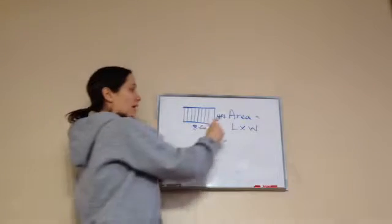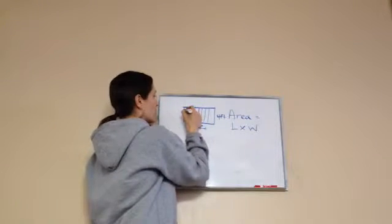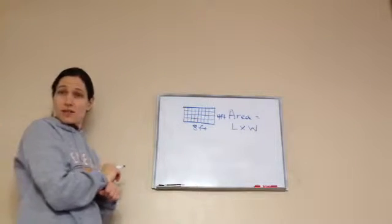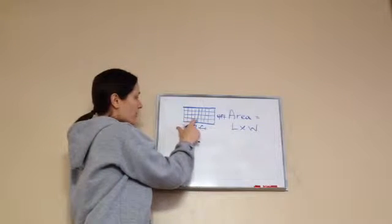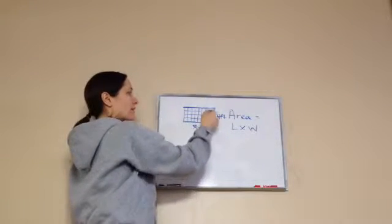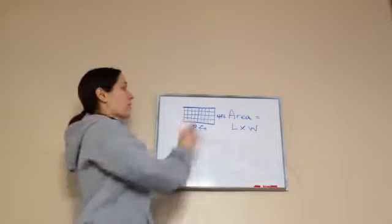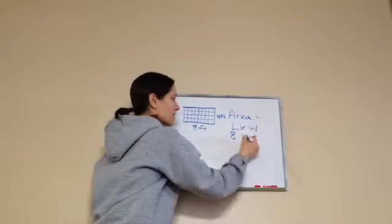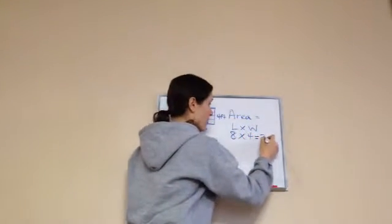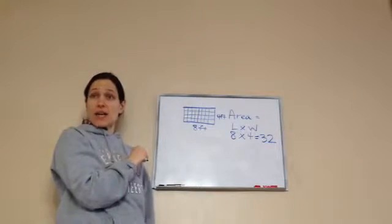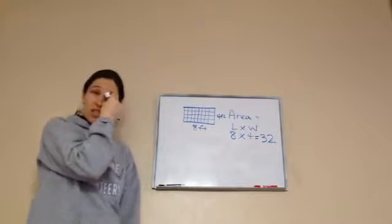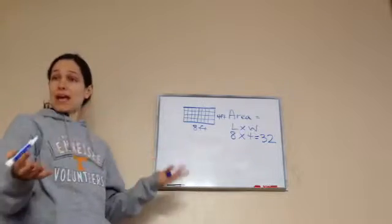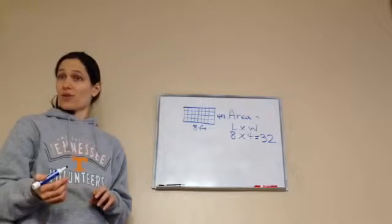So there's my four-foot side — one, two, three, four. Do I have eight tiles going this way? One, two, three, four, five, six, seven, eight. And do I have four tiles going this way? One, two, three, four. So how many tiles am I going to need? My area is length times width — length is eight and width is four. Eight times four is 32, so I should have 32 tiles. You'd say, 'Hey Mom, let's go buy 32 tiles to put in the bathroom.'